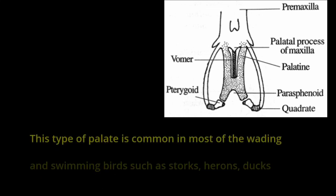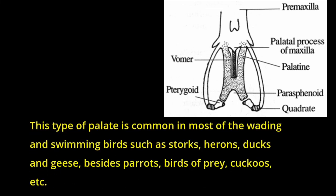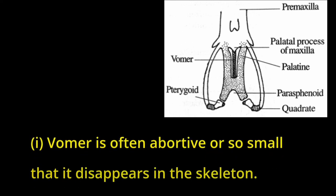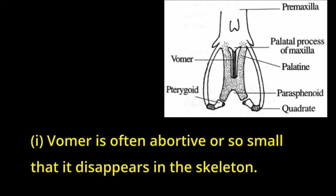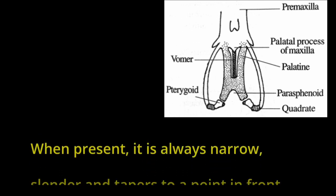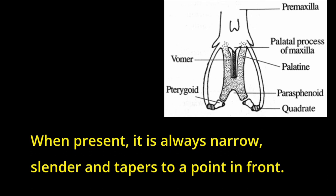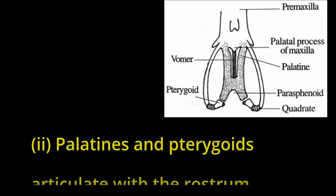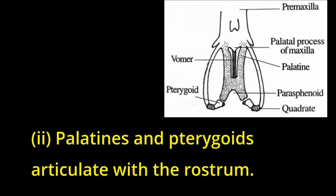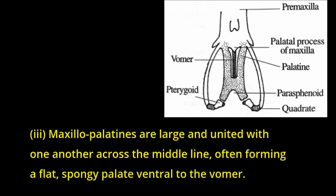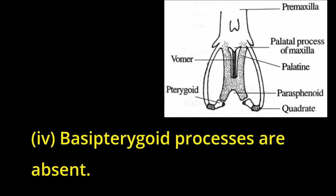3. Desmognathous Palate. This type of palate is common in most of the wading and swimming birds such as storks, herons, ducks and geese, besides parrots, birds of prey, cuckoos, etc. (i) Vomer is often abortive or so small that it disappears in the skeleton. When present, it is always narrow, slender and tapers to a point in front. (ii) Palatines and pterygoids articulate with the rostrum. (iii) Maxillopalatines are large and united with one another across the middle line, often forming a flat, spongy palate ventral to the vomer. (iv) Basipterygoid processes are absent.